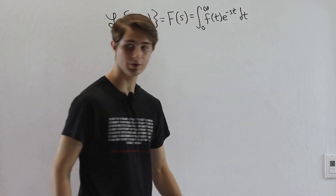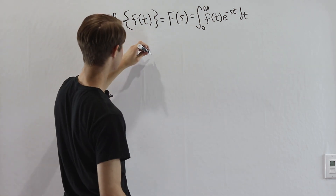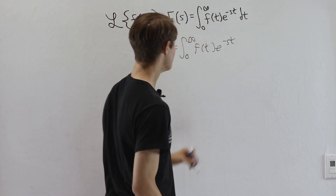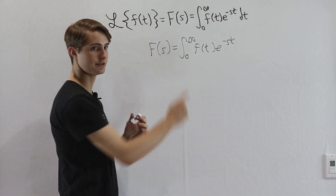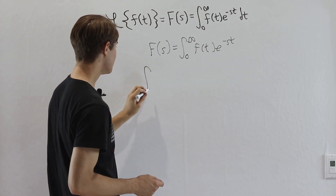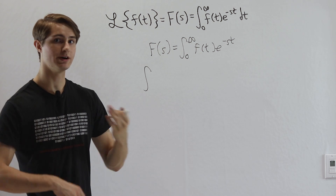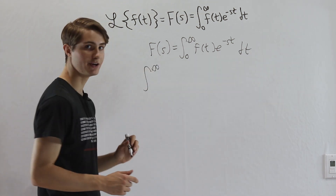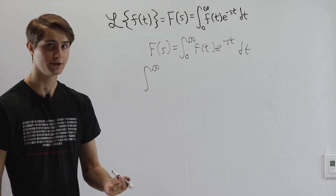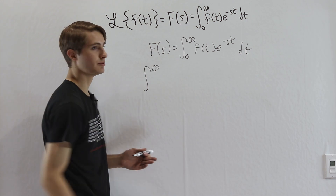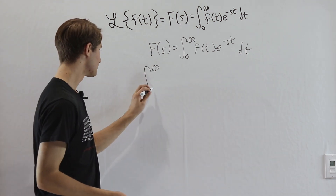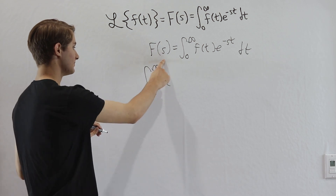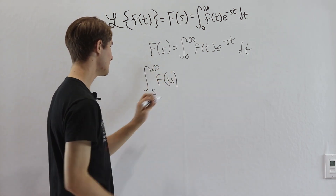This makes us think about what would happen if we integrated with respect to s instead of differentiating. We want a definite integral to avoid constants of integration. Since we're dealing with e to the negative st, infinity is a natural upper bound. We want s to be the lower bound, and we'll use a different variable of integration to avoid confusion, so let's write F(u) du.